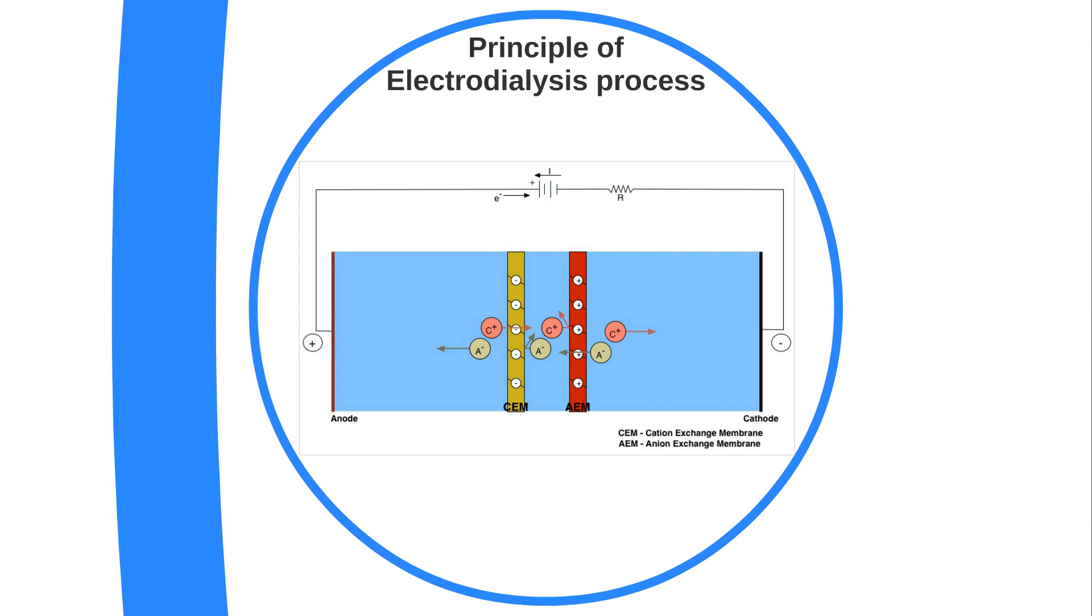Next to this membrane, place anion exchange membrane which allows only anions to pass through and reflects cations. Due to this arrangement, the concentration of ions increases between the membranes resulting in a concentrate channel. Now arrange multiple of such cation and anion exchange membranes alternative to each other. The ions are collected in one channel and removed from other channel resulting in alternative concentrate and dilute channels.